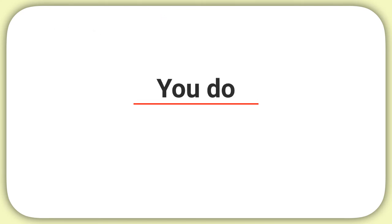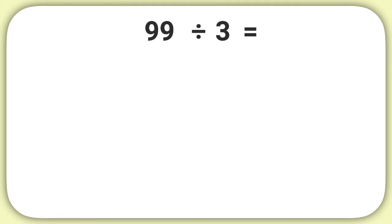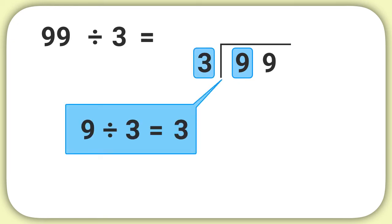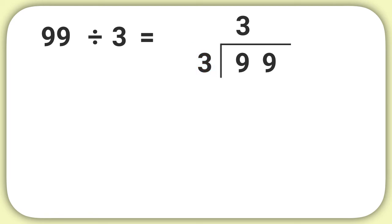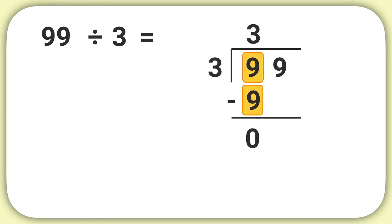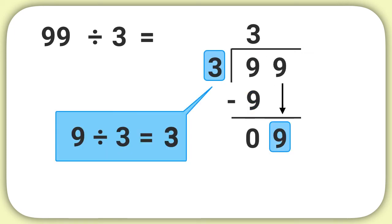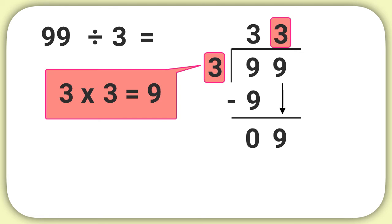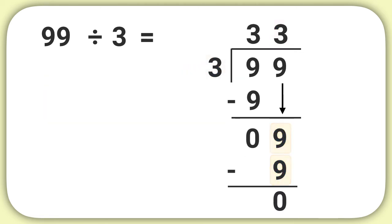Now it's time for you to practice on your own. Use long division to figure out what 99 divided by 3 equals. We'll start by dividing this 9 by 3. 9 divided by 3 is 3, and we write that above our line. Next we multiply 3 times 3 equals 9, and write minus 9 into our problem. We get 0 and bring down our next digit. Then we repeat: 9 divided by 3 equals 3, we write that in, then multiply 3 times 3 equals 9. When we subtract 9 minus 9, we get 0 and we're done. 99 divided by 3 equals 33.